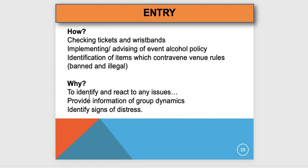When people come in, you've got to check tickets and wristbands. Your briefing tells you what tickets and what colour wristbands are allowed. You also need to advise on the event alcohol policy — alcohol cannot be consumed in view of the pitch at a football match, but at a concert it may be unrestricted. Any items contravening venue rules must be dealt with.